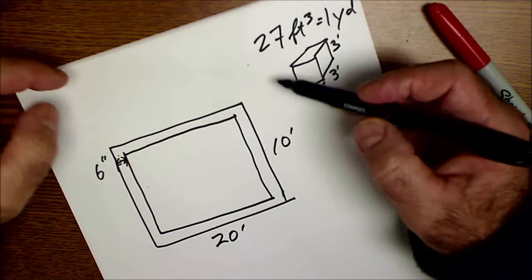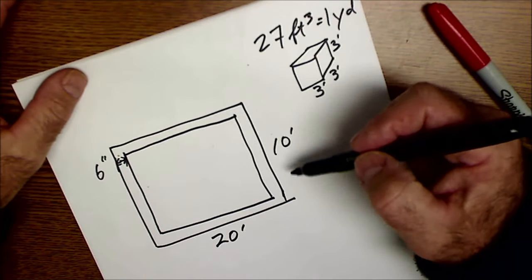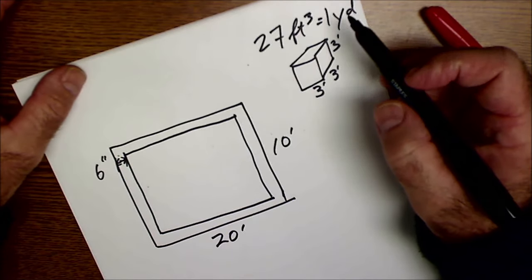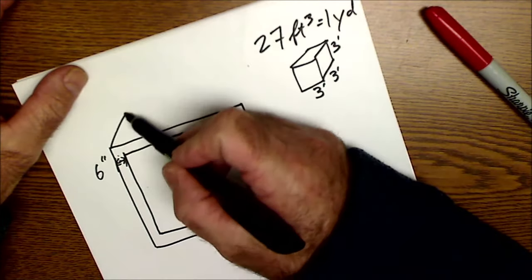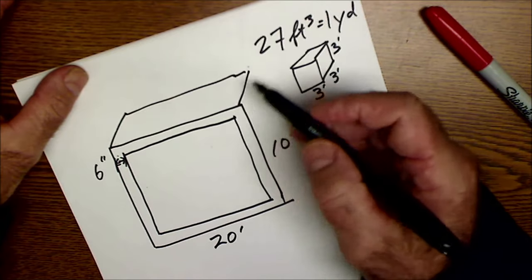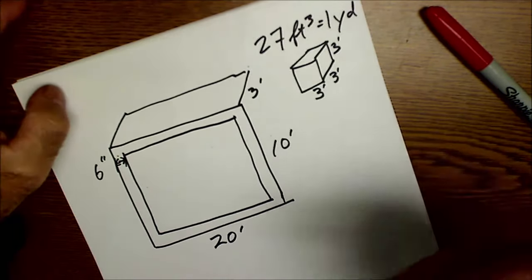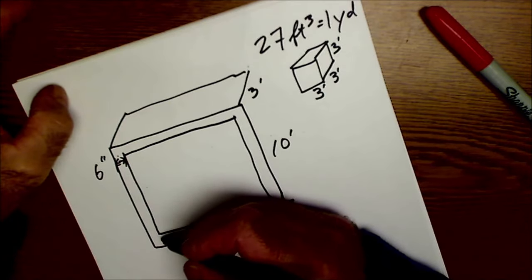One measurement we still need is the height of the wall, so let's say that height of the wall is three foot high. So I'm going to split it in two rectangles. Let's say this is one rectangle here, this is one here, the full length, and then there's one there.